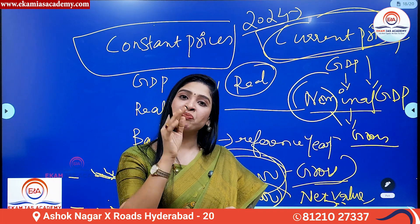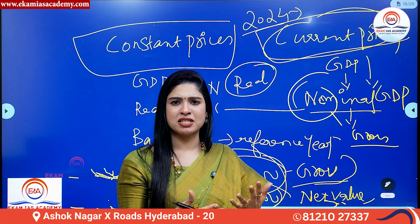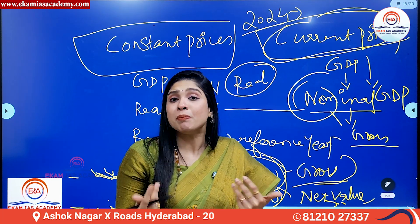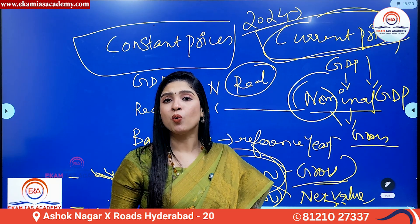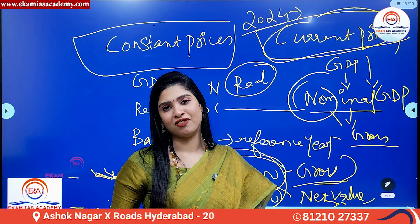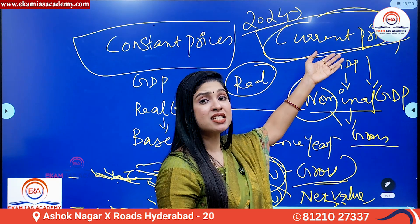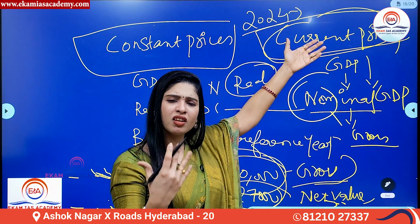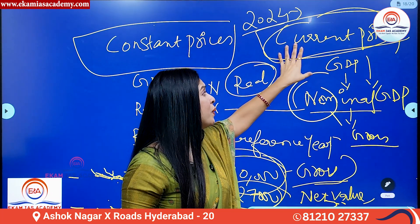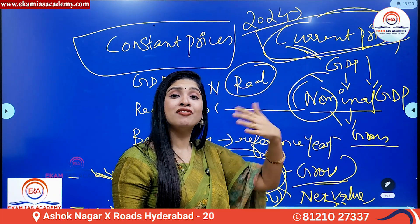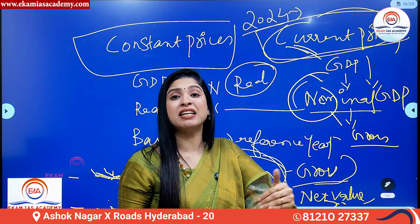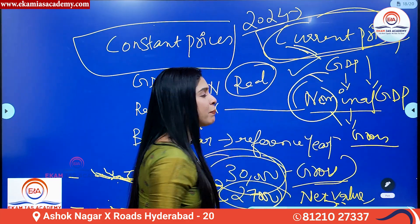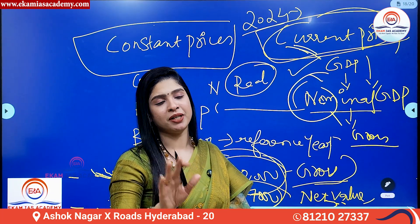Now, inflation today could be 4 percent; after one week, 5 percent. So many fluctuations and disturbances could occur in the calculation because of volatility in inflation. In current prices, we do not take all that into consideration. Whatever the current year's prices are, we calculate the value of goods and services produced in that particular year, which is 2024. That is called nominal GDP or GDP at current prices.